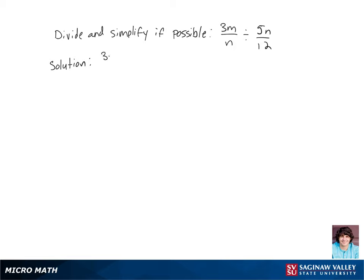Let's divide 3m over n divided by 5n over 12 and simplify if possible. So remember, when we're dividing by a fraction, that's the same as multiplying by its reciprocal.